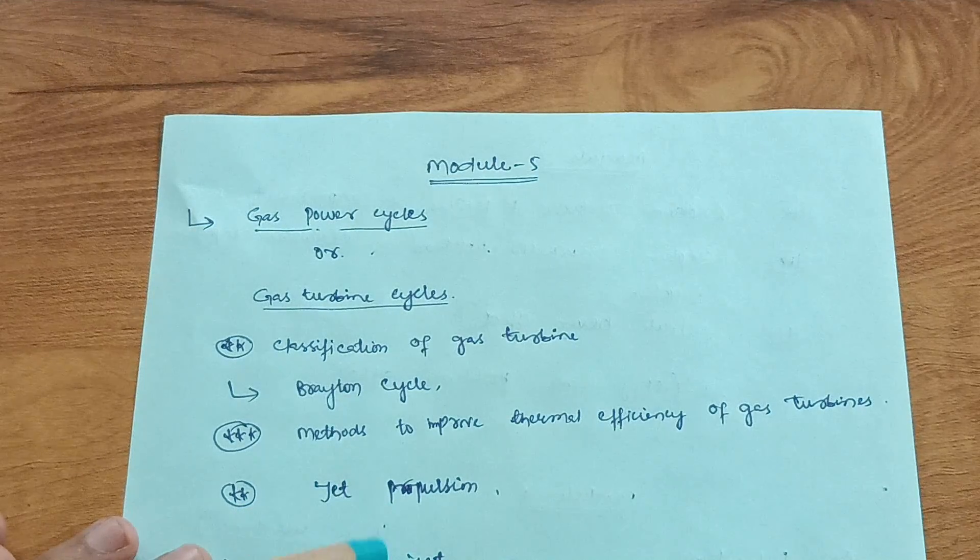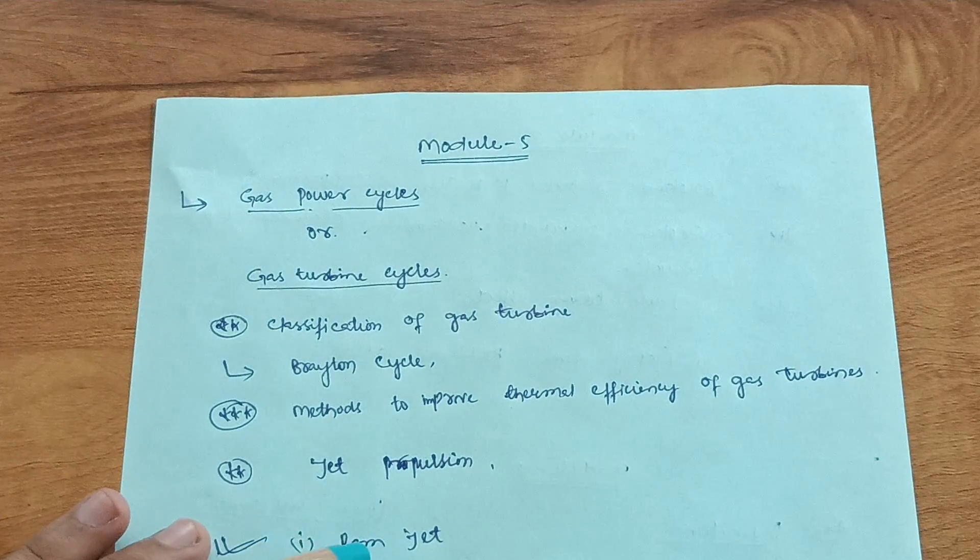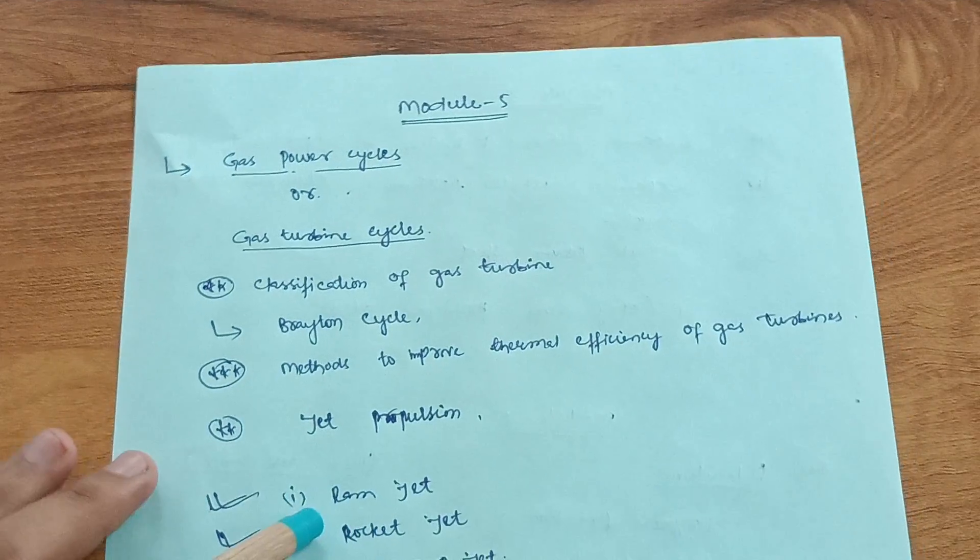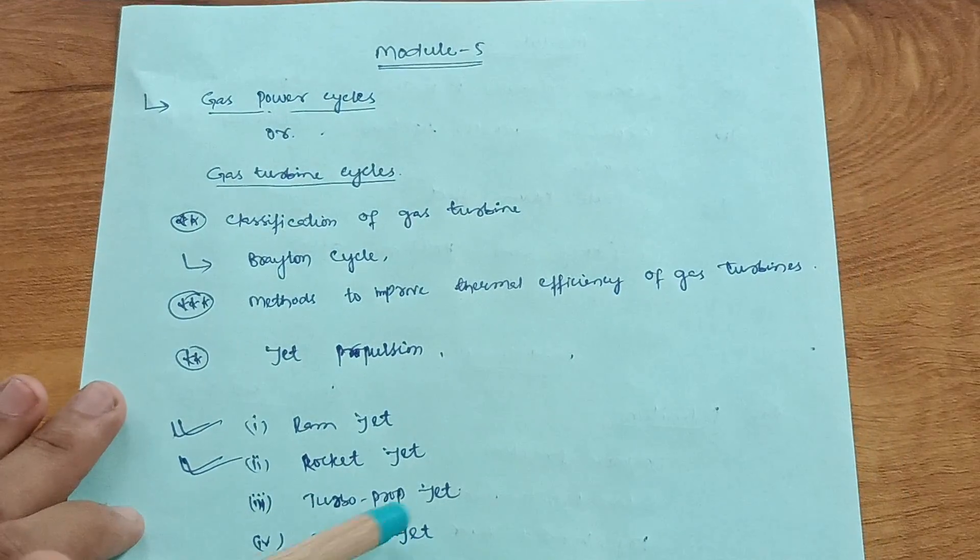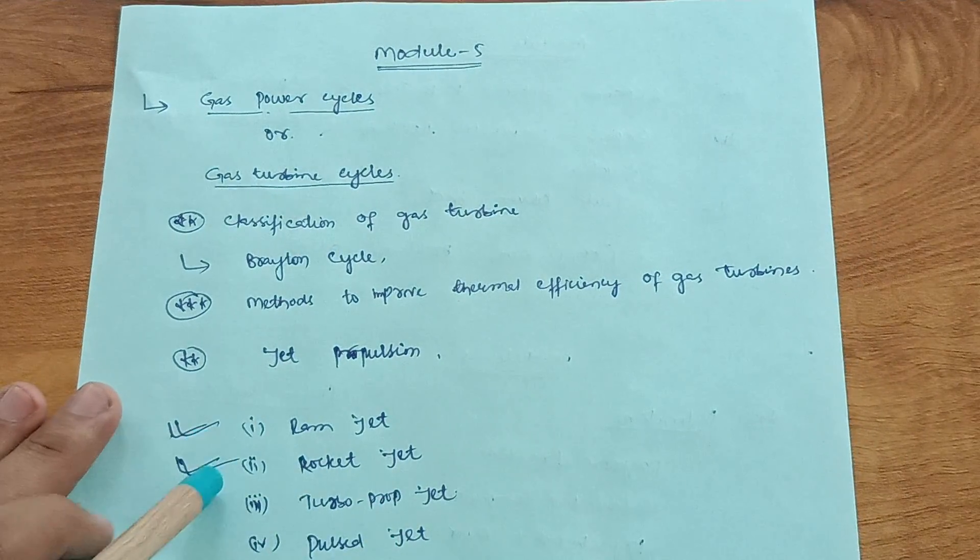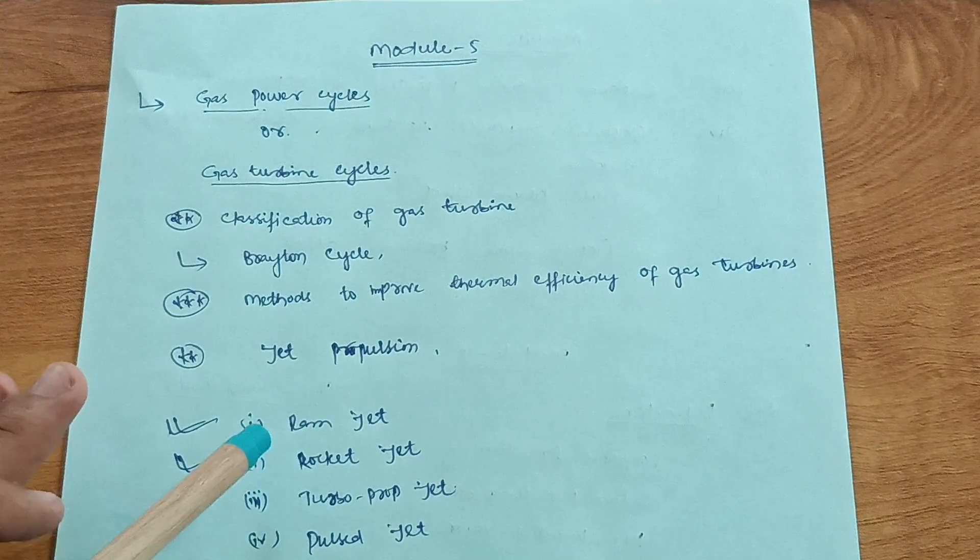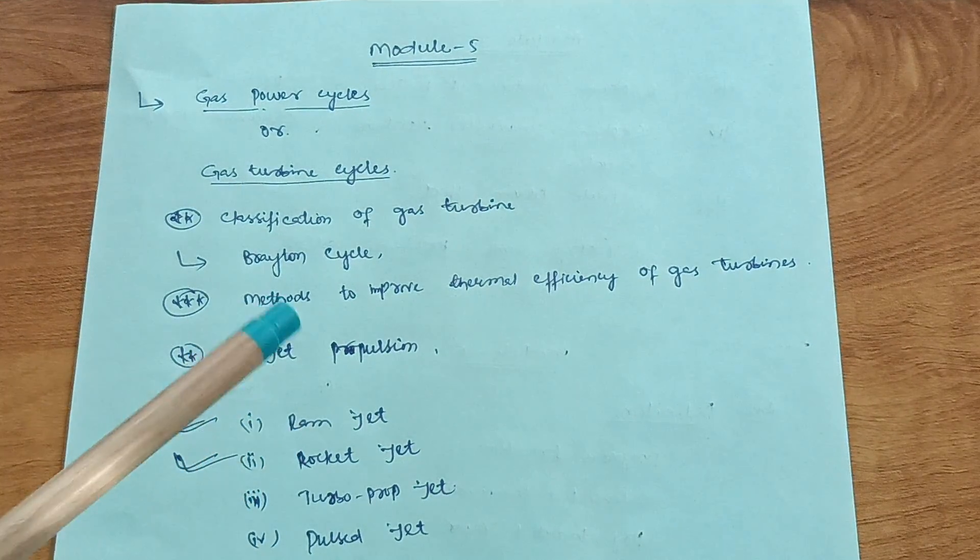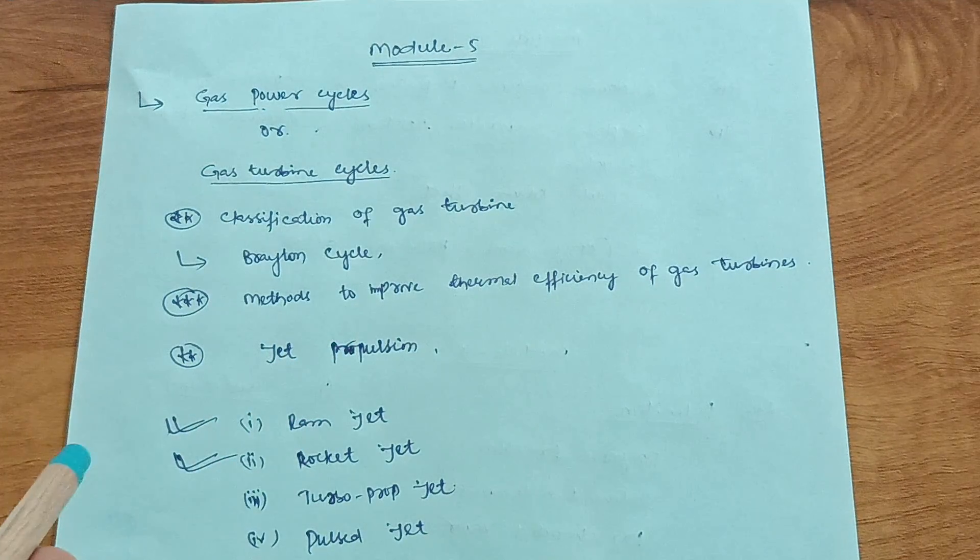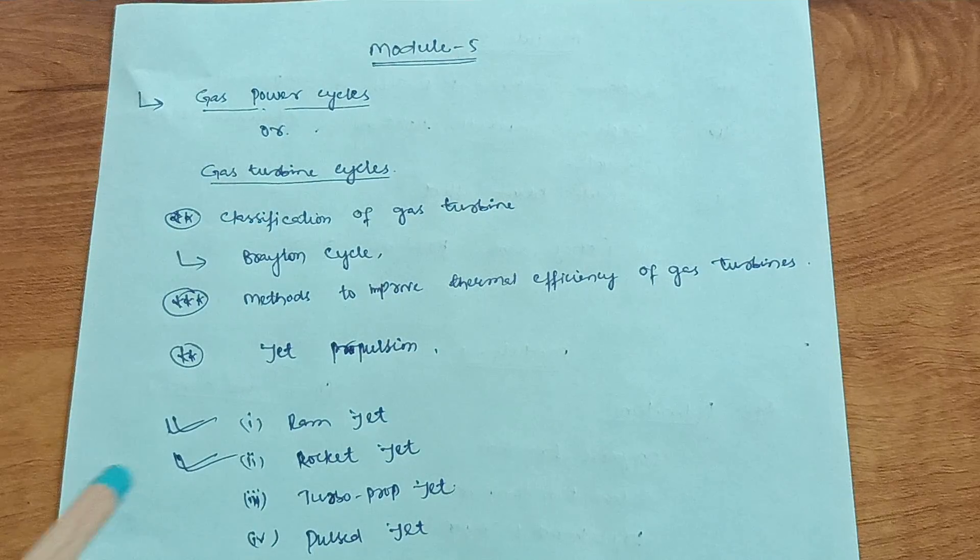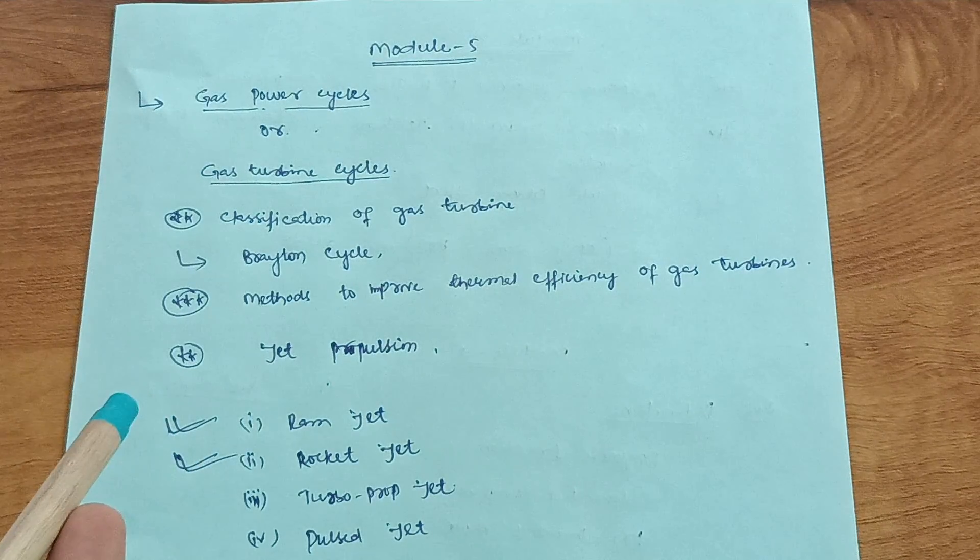Next part is jet propulsion, one of the most important questions. You have to cover these diagrams and write in your own words whatever you understand from these jet propulsions like ramjet and rocket. Turbojet is also there, but these two are the most important. Draw the diagrams and write in your own words so you will get marks. This much content is enough to pass Thermodynamics, which is considered the toughest subject in mechanical engineering.